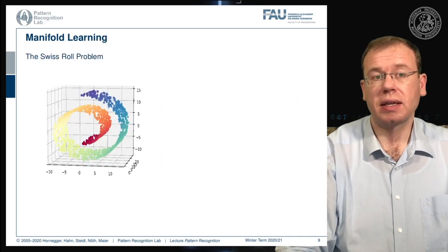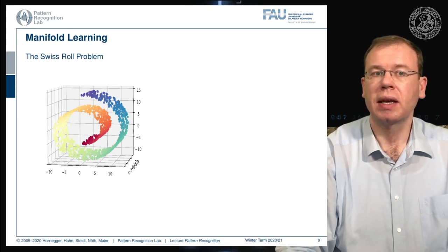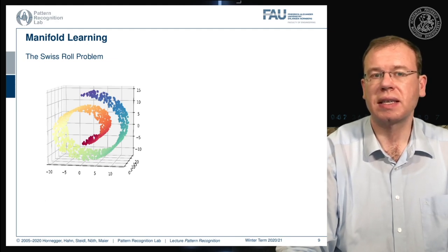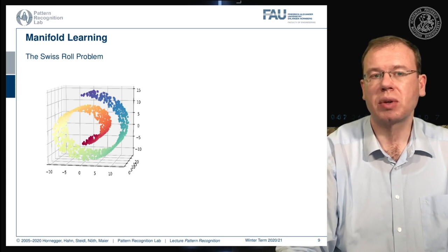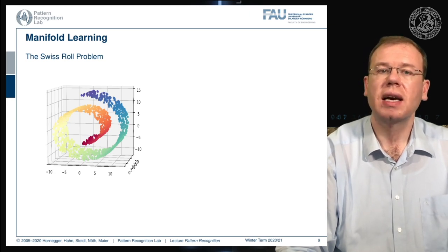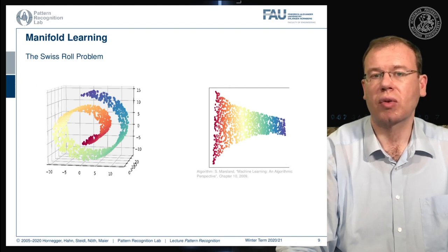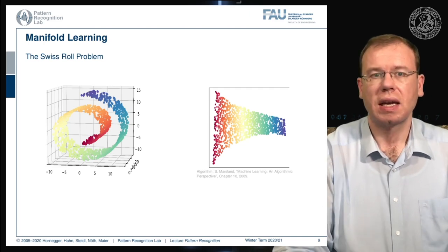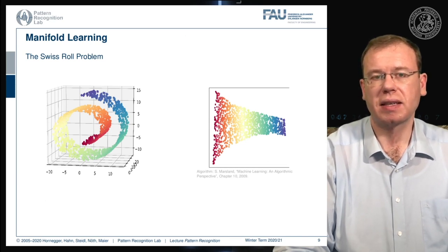Manifold learning is essentially the idea to derive this manifold automatically. The most famous example is probably the Swiss roll. Here you can see a set of points embedded in 3D space, but their similarity is encoded in color — blue points are more similar to each other than red ones. What you want to do is map this 3D structure onto a 2D space without losing the internal manifold information. This can be done using the graph Laplacian to compute such dimensionality-reduced spaces.